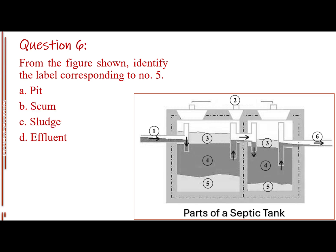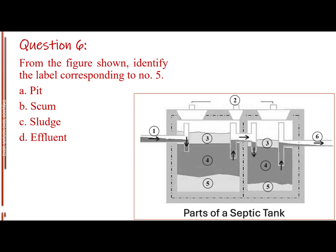Question number 6. From the figure shown, identify the label corresponding to number 5. Letter A, pit. Letter B, scum. Letter C, sludge. Letter D, effluent. The answer is letter C, sludge.